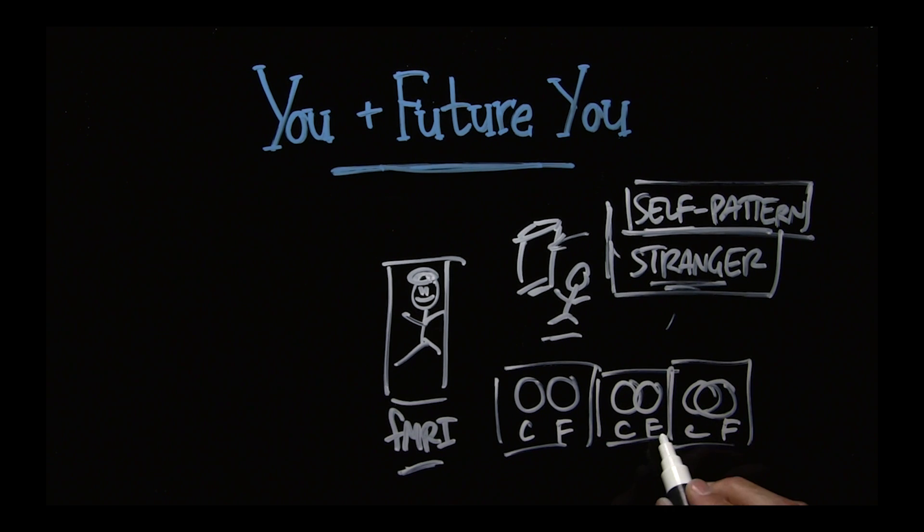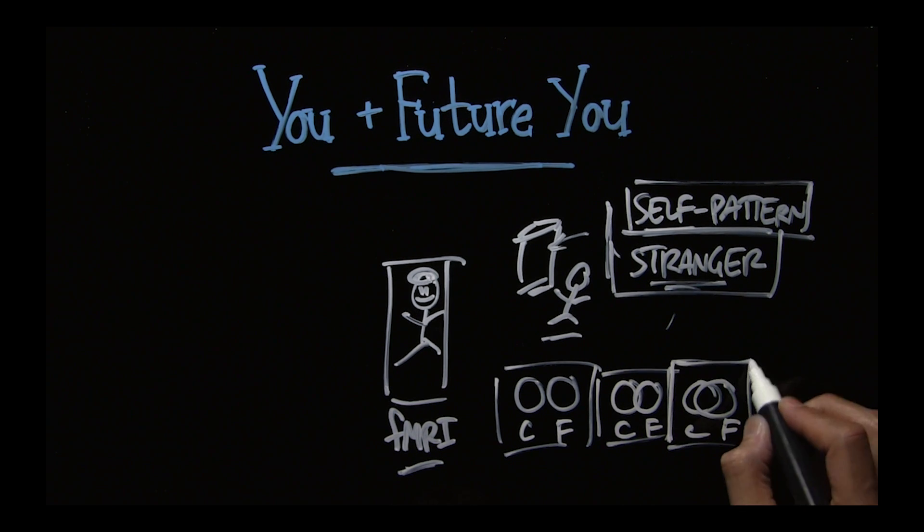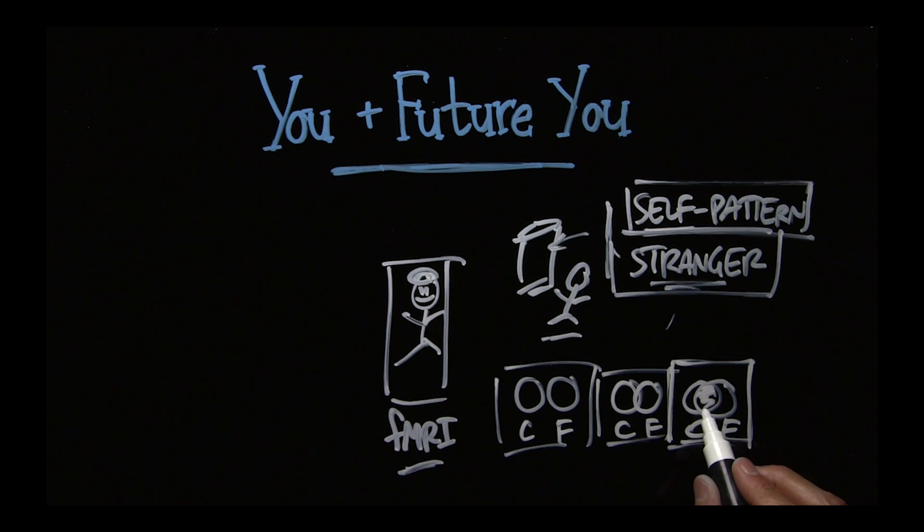The more connection you have to your future self, your current and future self, the more fusion there is here, the more likely you are to be able to cool your hot brain and delay gratification so that this future version of you, which you perceive to be very much like you, will benefit. It's a really powerful idea.